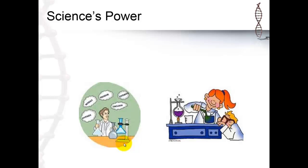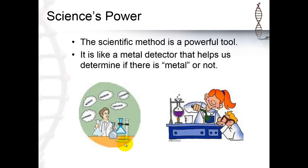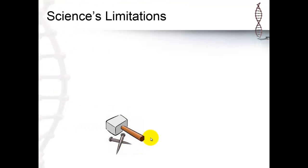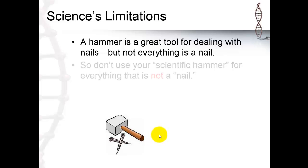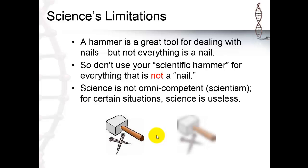So science's power is having all these tools at its avail, and inventing new ones all the time. Each tool is like a metal detector. It helps us determine if there is a metal or not. But a hammer is a great tool for dealing with nails, but not everything is a nail. So don't use your scientific hammer for everything that is not a nail. Science is not omnicompetent.